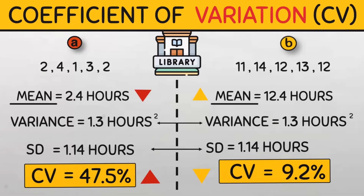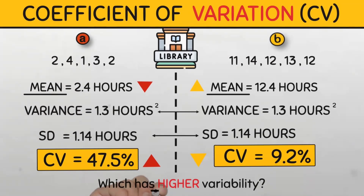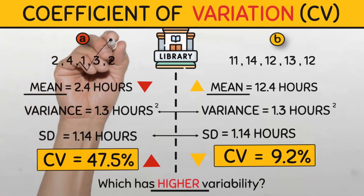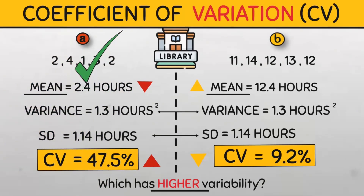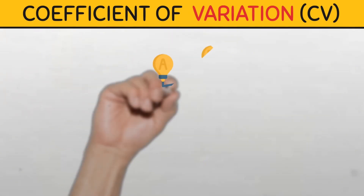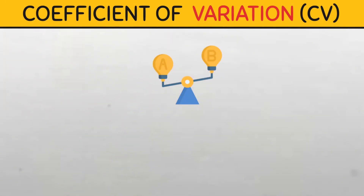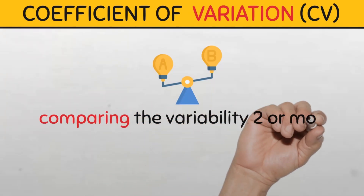But we know that this doesn't tell the whole story of variability because their means are very different. The key insight to comparing variability of different data sets is by using the coefficient of variation. Even though the absolute variability — the standard deviation and variance — are the same for both groups, the coefficient of variation is much higher for data set A. This implies that relative to its mean, data set A exhibits much greater variability than data set B. In simpler terms, the fluctuations in data set A are large compared to its average value, while the fluctuations in data set B are small compared to its much larger average value. So group A has a higher variability, meaning the medical students are more consistent with their time spent in the library compared to engineering students.